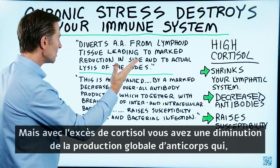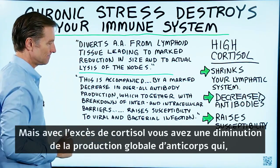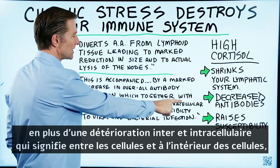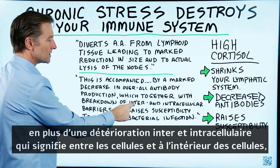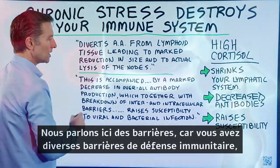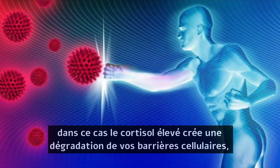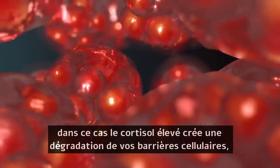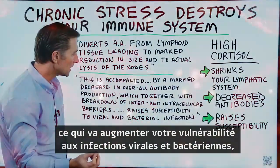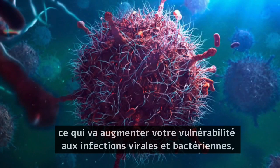But with high cortisol, you have a decrease in overall antibody production, which together with a breakdown in inter- and intracellular barriers — that means between the cells and within the cells — creates various breakdowns in your immune defense barriers. High cortisol creates a breakdown in your cellular barriers, which is going to raise your susceptibility to viral and bacterial infections.